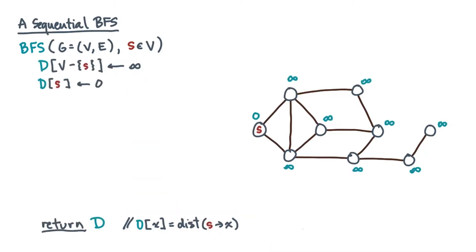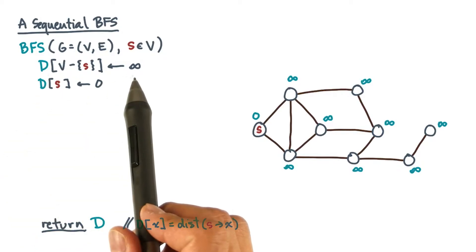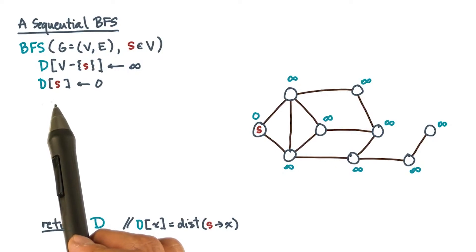What it will produce is a map of distances d, where d of a vertex x is the distance from s to x. Now initially, we don't know any of the distances, so we'll initialize d to be infinity for all vertices except s. s is just zero edges away from itself.